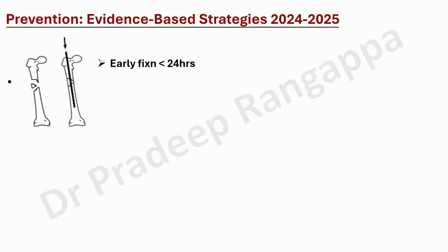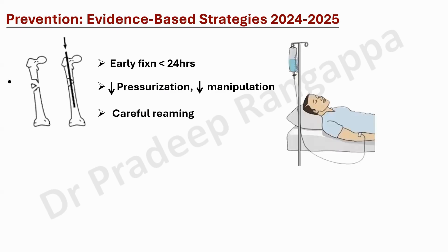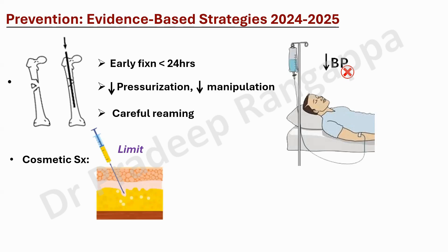Regarding prevention, early fixation of fractures within 24 hours of polytrauma is key to preventing fat embolism. During surgery, reducing pressurization, minimizing manipulation, and careful reaming are important orthopedic considerations. From the intensivist's perspective, adequate hydration and preventing hypotension are key. When someone is undergoing cosmetic surgery, limiting the volume of fat extracted per session, careful cannulation, and avoiding excessive negative pressure help prevent fat embolism.